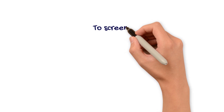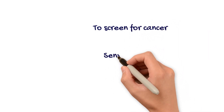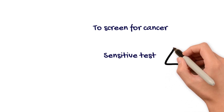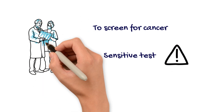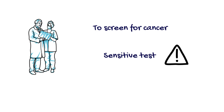For example, if we use a test to screen for cancer, we should choose a sensitive test. Since cancer can be life-threatening, we need a test that will rarely miss people who actually have cancer, so that we can treat them in a timely manner. Using a highly sensitive test for cancer, people who receive a negative result can rest assured knowing that they do not have cancer. Therefore, screening with a highly sensitive test first helps us minimize the risk of missing cases. However, in choosing a sensitive test, we should be aware that we are likely to end up with a high number of false positive cases.